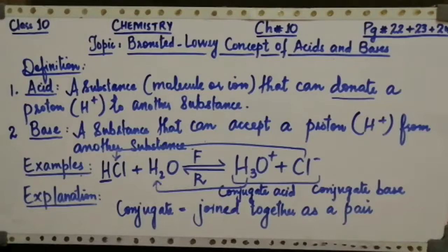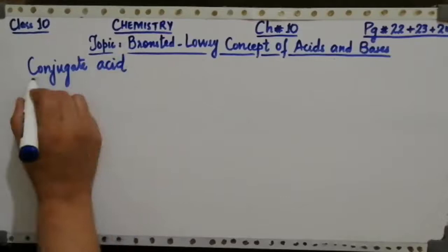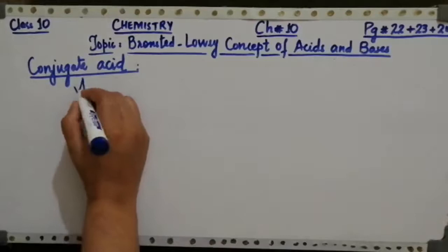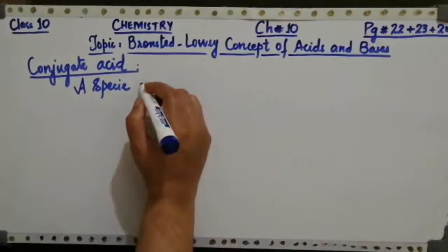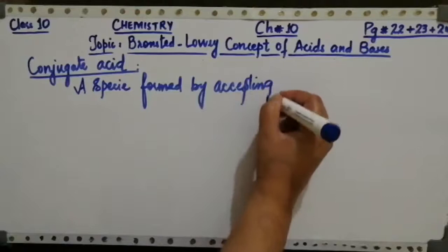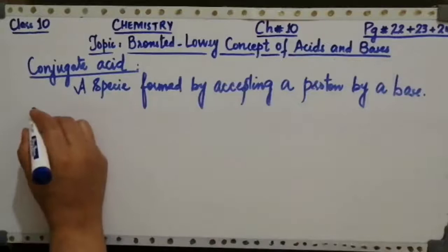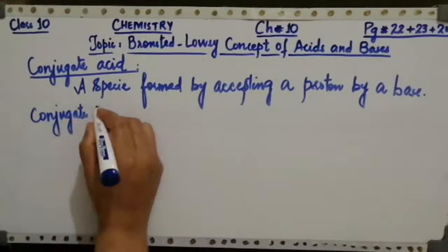The next heading is related to the conjugate acid-base pair. What is conjugate acid? It is a species — a chemical molecule or ion — that is formed by accepting a proton, that is a hydrogen ion, by a base. The second concept is conjugate base: the reverse substance — a species formed by donating a proton from an acid.